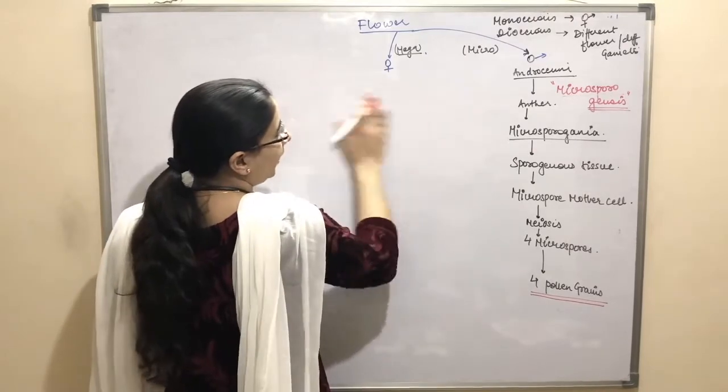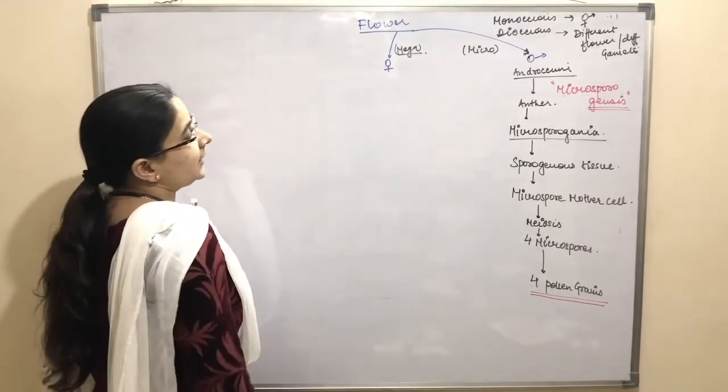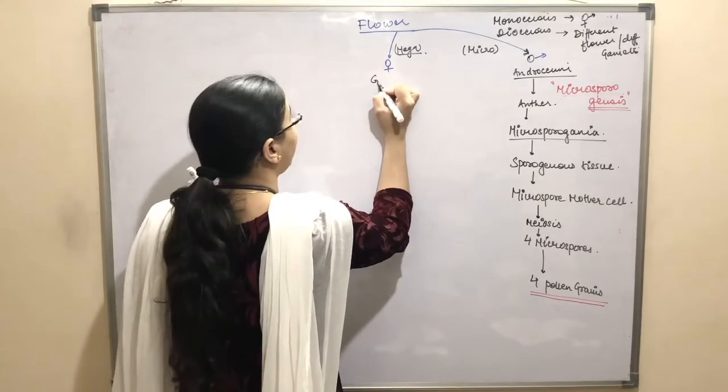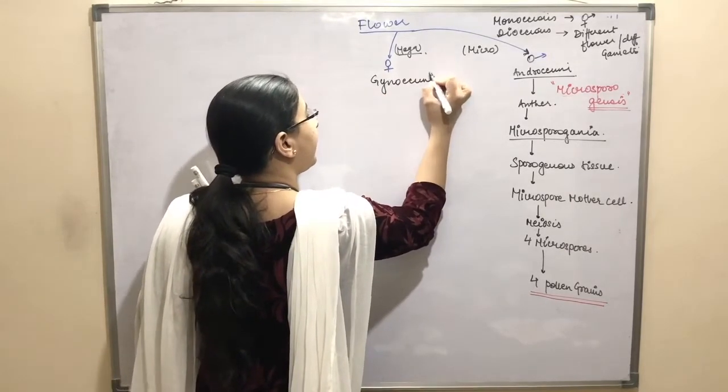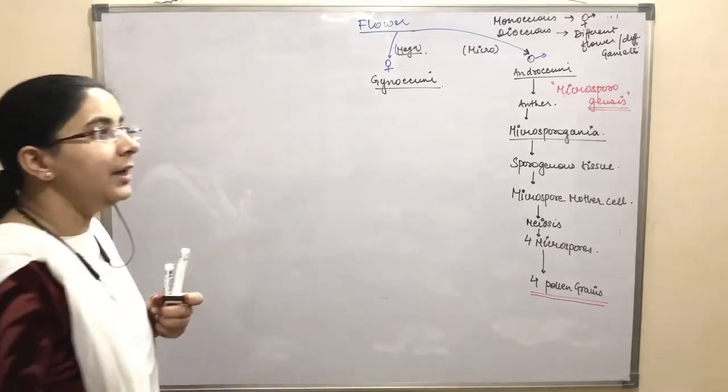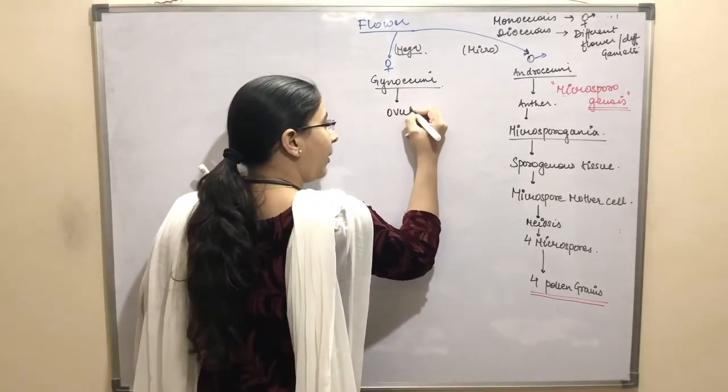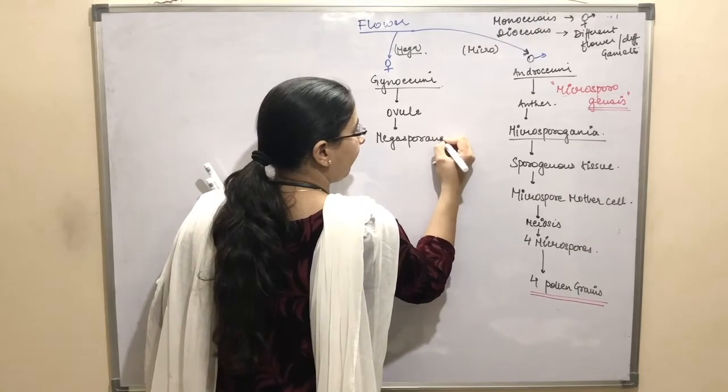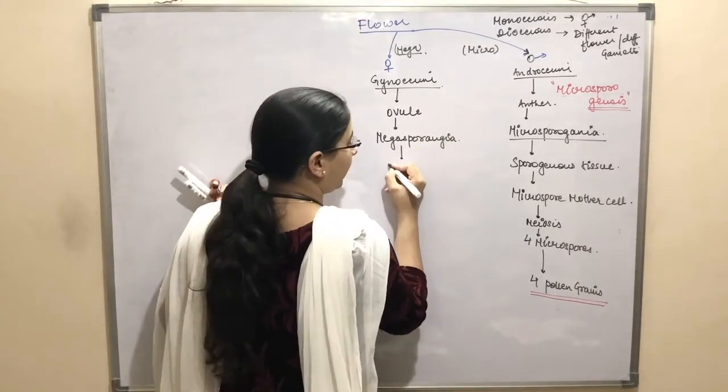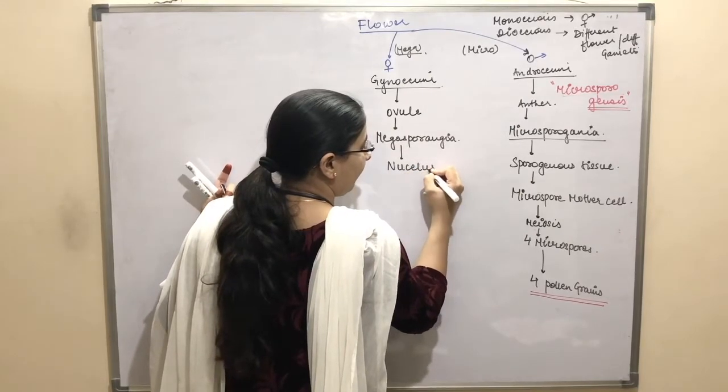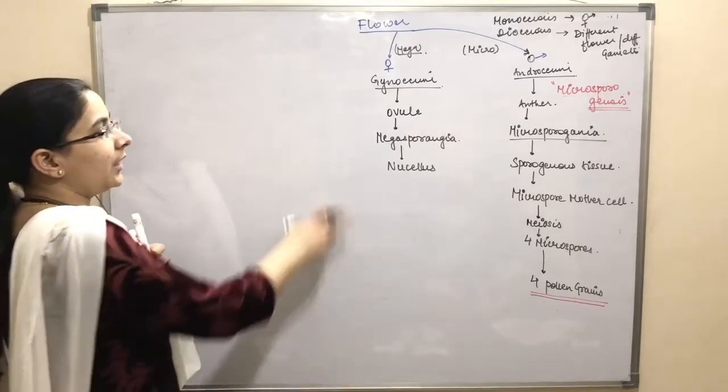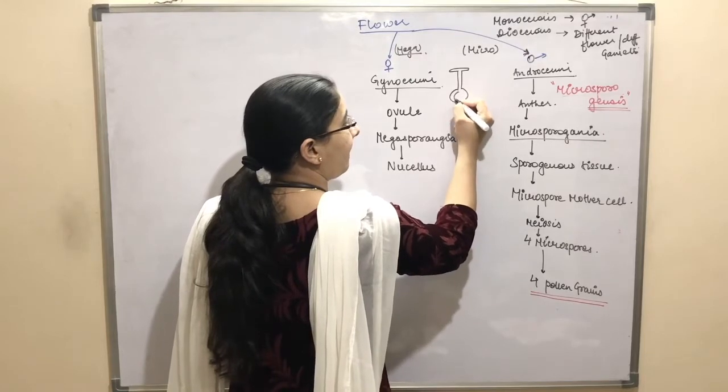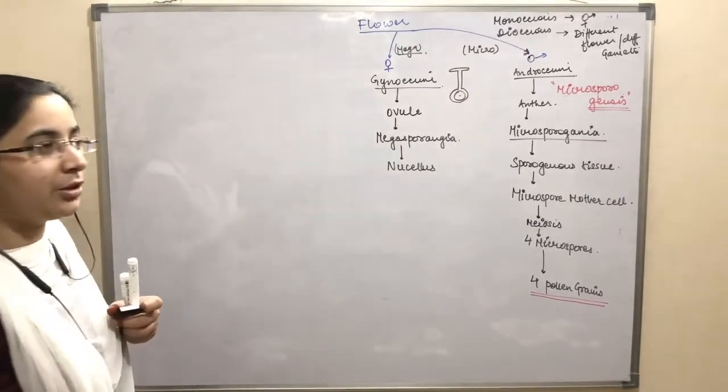The female reproductive part of the flower is called as gynoecium. The ovary is a site where your egg formation will take place.